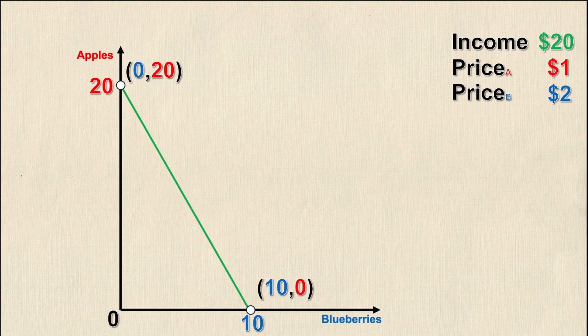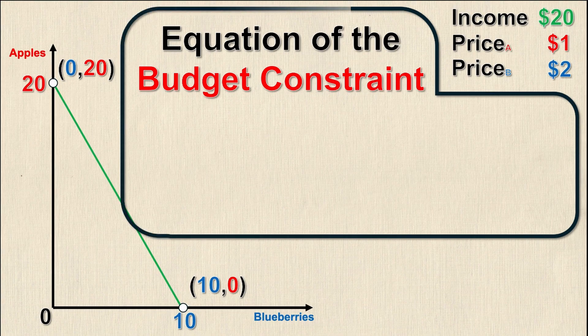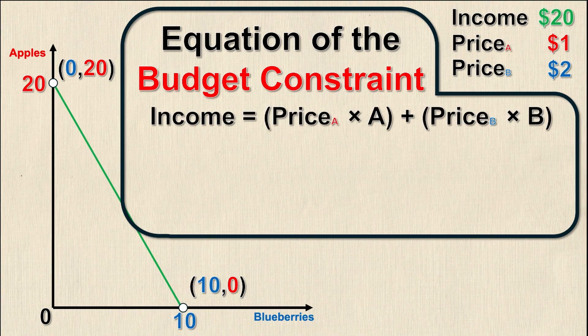As a bonus for people still sticking around who want to know how to find the equation of the budget constraint, we're going to briefly do that now. Generally speaking, the budget constraint equation looks like this: Income equals the price of good A times the number of units of good A plus the price of good B times the number of units of good B.